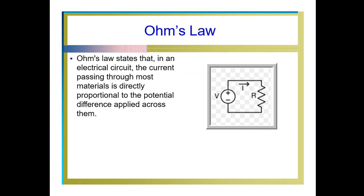Ohm's law is stated as: in an electric circuit, the current passing through most materials is directly proportional to the potential difference applied across them. For example, there is a resistive material. We are applying some voltage to the resistive material, and hence the current is passing through it. The current passing through the resistance is directly proportional to the applied voltage, at constant temperatures.